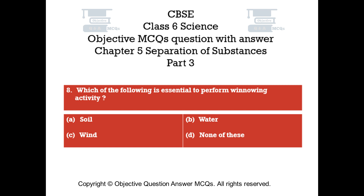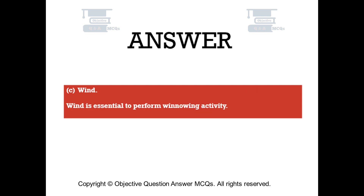Question number 8. Which of the following is essential to perform winnowing activity? Option A: Soil. Option B: Water. Option C: Wind. Option D: None of these. The right answer is Option C — Wind. Wind is essential to perform winnowing activity.